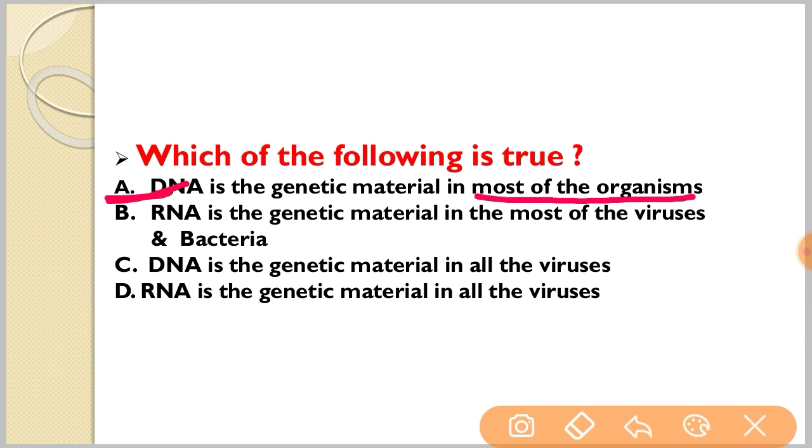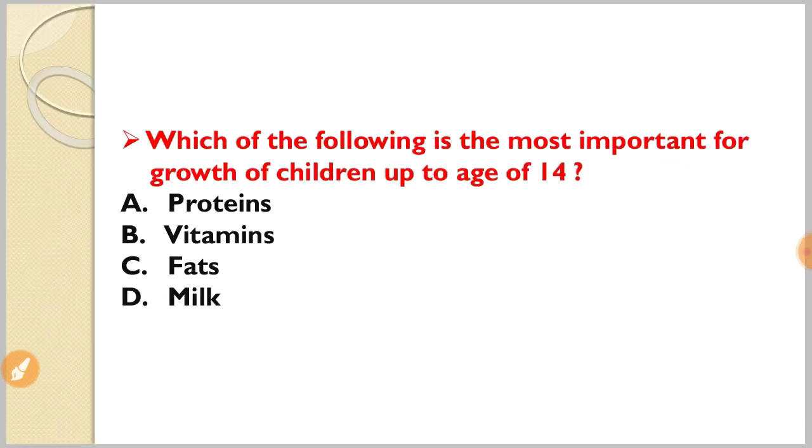The next question is: which of the following is most important for growth of children up to age 14? The answer is proteins. Protein is called a bodybuilder.